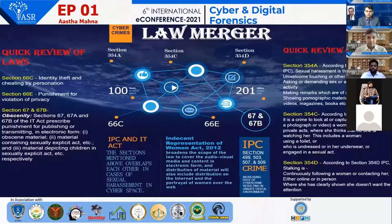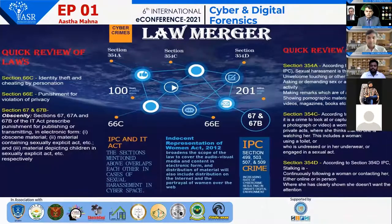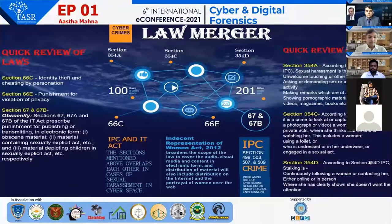There are some sections which are included in the IT Act but do not overlap with the IPC, so the punishment for them may be less. Section 65 of the IT Act prescribes punishment for tampering with computer source documents, providing that any person who knowingly conceals, destroys, or alters any computer source code, computer program, system, or computer network, when the source code is required to be kept by law, shall be punishable with imprisonment for up to three years or a fine up to three lakhs. Section 409 overlaps to a certain extent with Section 65 of the IT Act.